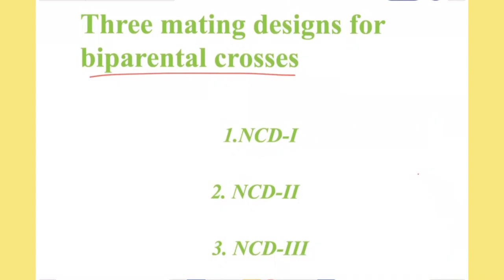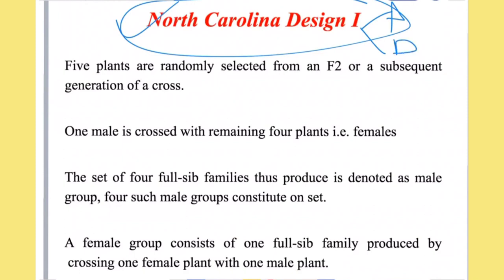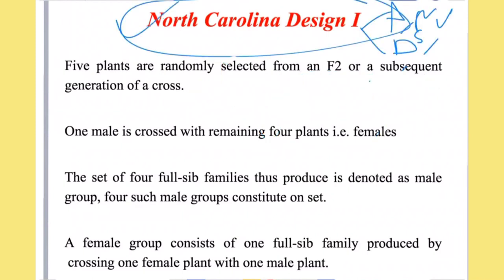Bi-parental cross analysis includes three types of mating design: NCD1 (North Carolina Design 1), NCD2, and NCD3. NCD1 is a very popular multipurpose design used for both theoretical and practical plant breeding applications, most commonly used for estimation of additive and dominance variances as well as evaluation of full-sib and half-sib recurrent selections. In this design, plants are randomly selected from subsequent generations, where one plant acts as the male parent and four others act as female parents. The one male is crossed with the four female parents.